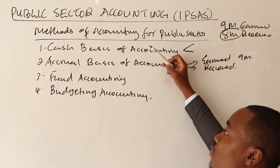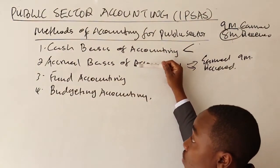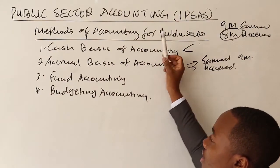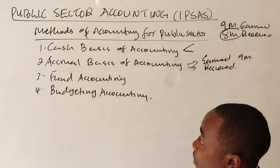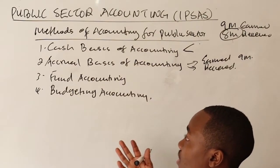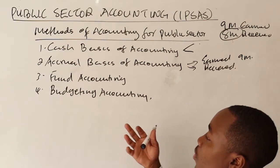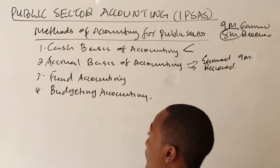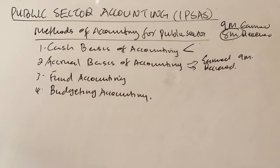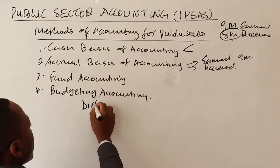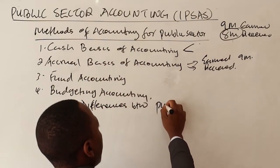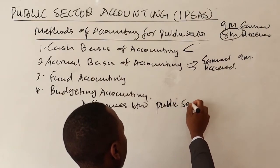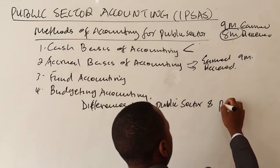The county government has been using cash basis but has now adopted the accrual basis of accounting. Fund accounting is mostly applicable to retirement benefits or pension schemes. We also have budgeting accounting. Those are the main methods of accounting for the public sector. Now let's look at the differences between the public sector and the private sector.